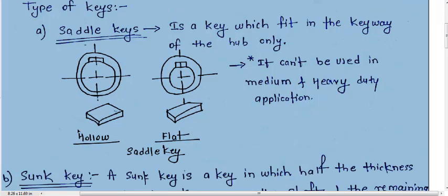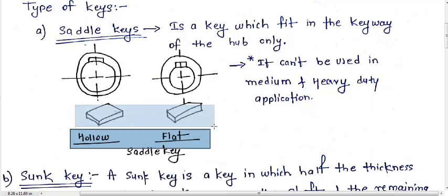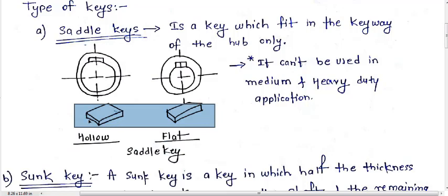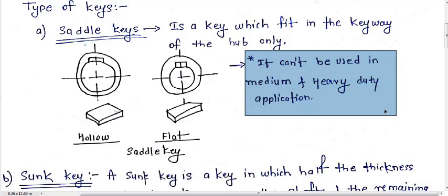A saddle key can be categorized into two parts: first is the hollow saddle key and second is the flat saddle key. The hollow saddle key has a curvature at the bottom end which connects with the shaft, while the flat saddle key has a flat end connecting with the shaft. The basic application of the saddle key is for low duty applications only; it cannot be used in medium or heavy duty applications.